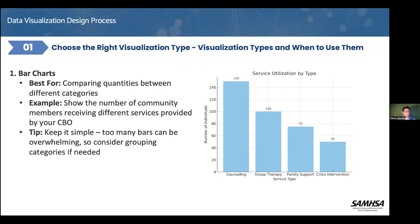The bar chart reveals the most and least popular services. You can actually tell a story here just by looking at these numbers. We want to keep it simple and make sure it's easy to understand. What is it that we want to showcase? How many people are accessing the different services that we offer?